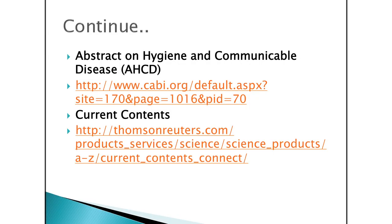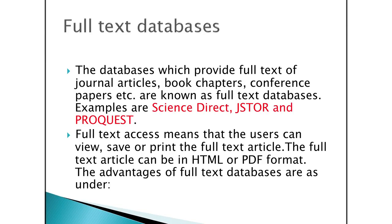In certain cases, abstracts may offer an appropriate substitute for whole research articles. Examples include Abstract on Hygiene and Communicable Diseases databases (AHCD) and Current Contents. Full-text databases provide the full text of journal articles, book chapters and conference papers. Examples are ScienceDirect, JSTOR and ProQuest.